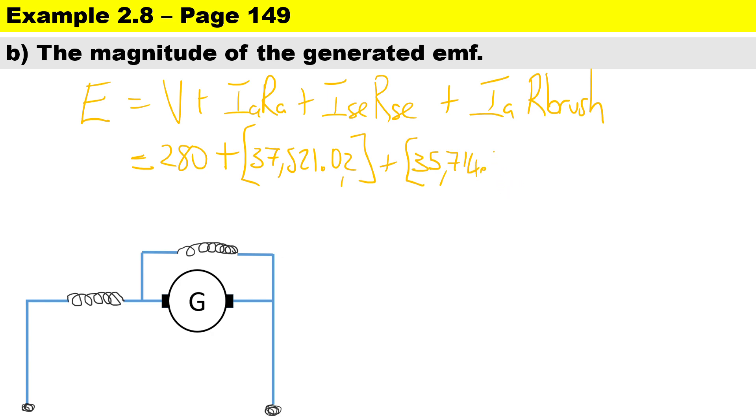What we notice is that they do not mention anything about the volt drop across the brushes, so I'm going to say that is equal to zero. So the total EMF we get here is 296.433 volts.